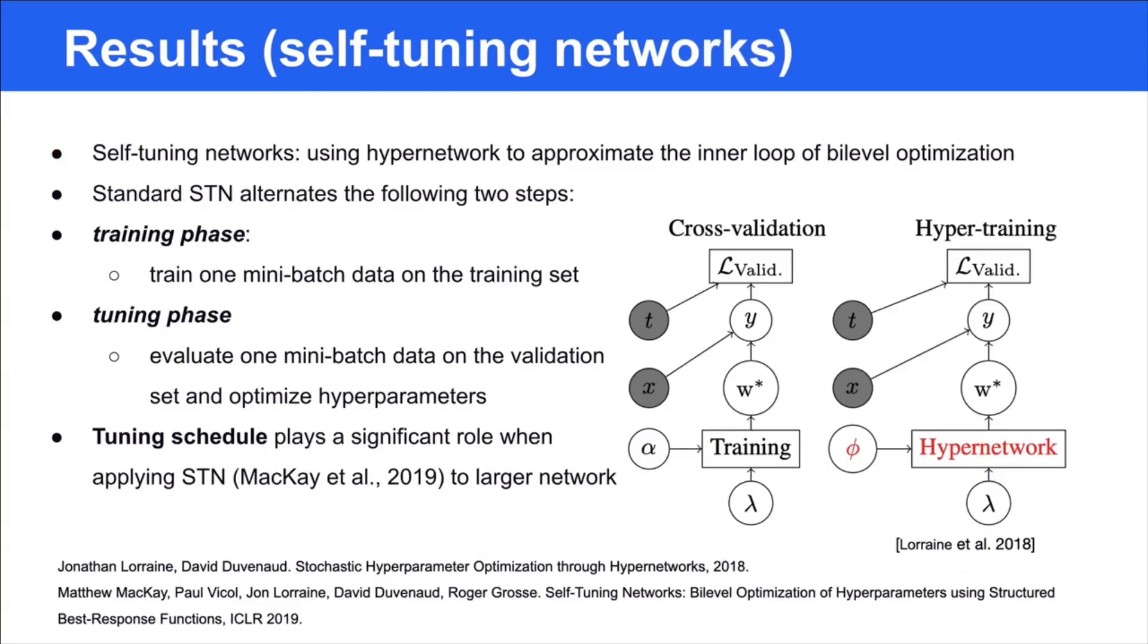Finally, we verify the effectiveness of our proposed algorithm on two challenging deep learning applications. Self-Tuning Networks, or STN, is an online algorithm that uses a hypernetwork to approximate an inner loop of the bi-level optimization. Standard STN tunes hyperparameters, such as dropout, weight decay, and data augmentation, by alternating the following two steps: a training phase, where you train one mini-batch data on the training set, and a tuning phase, where you evaluate one mini-batch data on the held-out validation set and then backpropagate the gradients through the hypernetwork to update the hyperparameters.